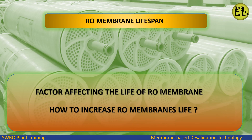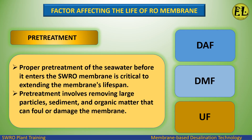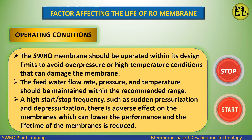Proper pretreatment of the seawater before it enters the SWRO membrane is critical to extending the membrane's lifespan. Pretreatment involves removing large particles, sediment, and organic matter that can foul or damage the membrane. Common pretreatment types include dual media filtration, dissolved air flotation (DAF), and ultrafiltration (UF).